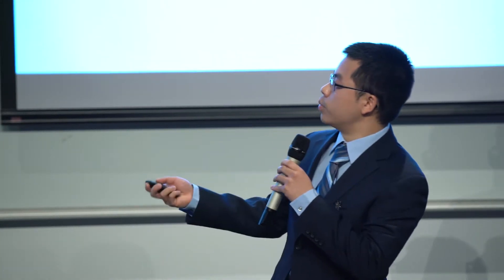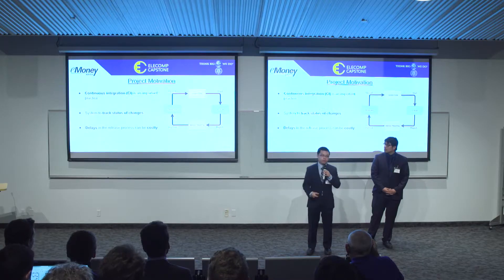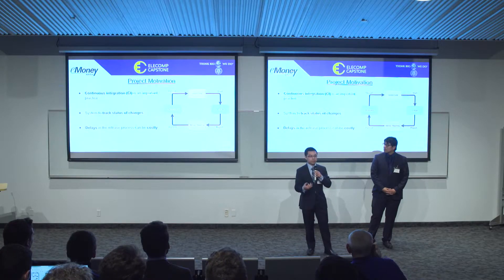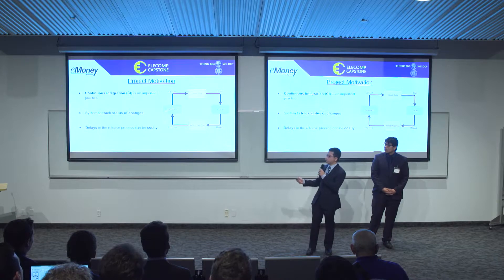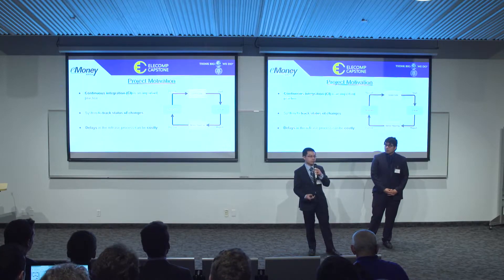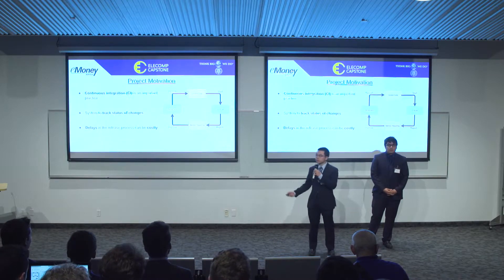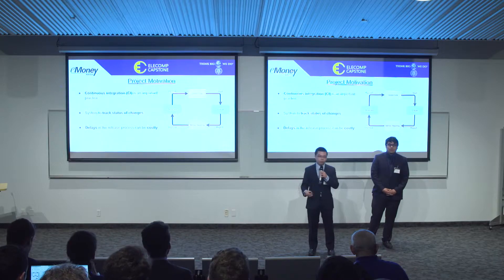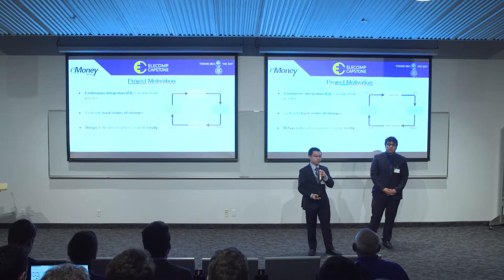The diagram here briefly goes over what a software deployment cycle with continuous integration would look like. To start, developers will integrate their source code often several times a day. They'll then go through an automated build, which will determine if there are any errors in the code. Once the build is done, it will report back to the developers so that they can make any necessary changes.